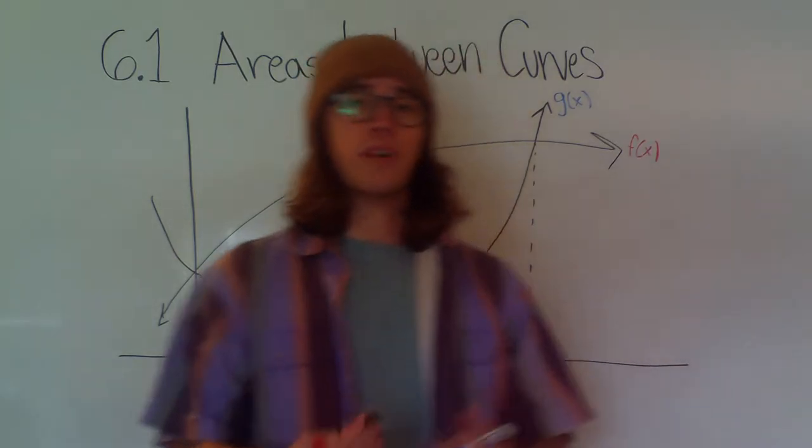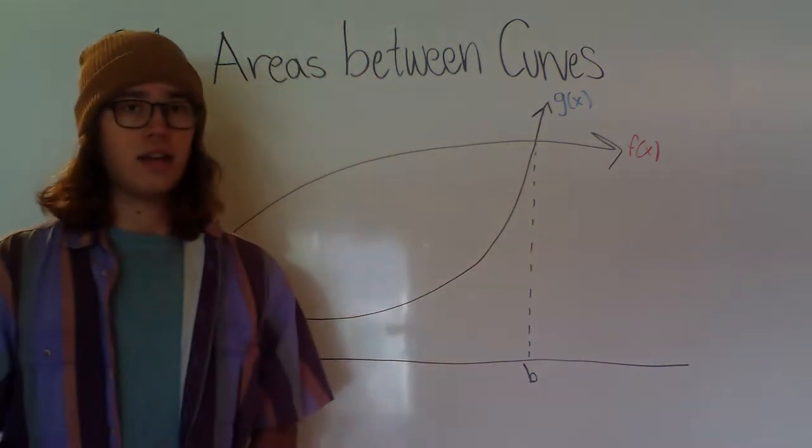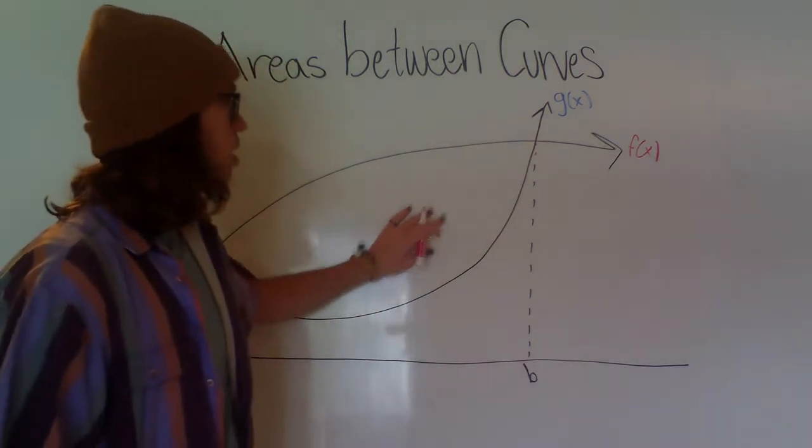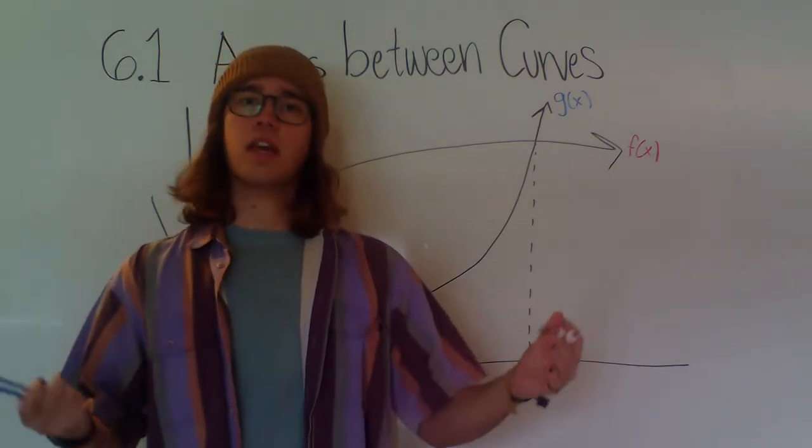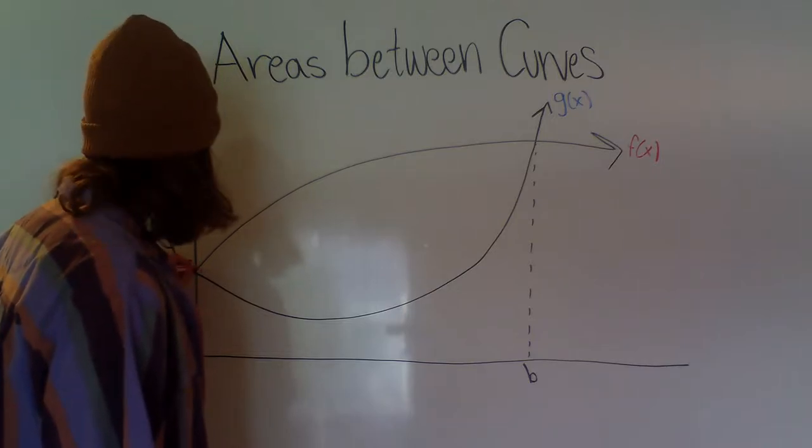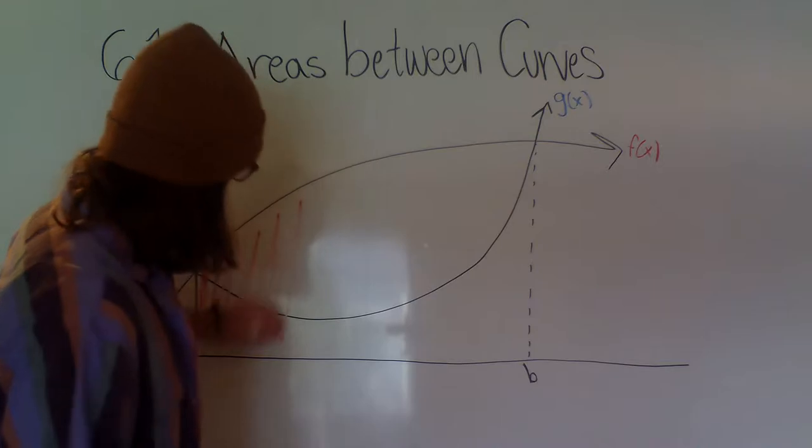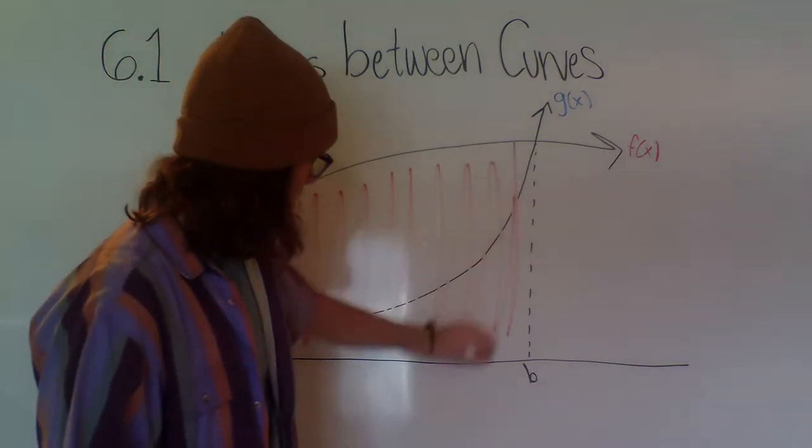So today we want to find the area between two curves. Let's say we have f of x as our red area and we have g of x as our blue area, and we want to find the area in between. If we just look at our curves and fill in the area, we can get a better idea of where to start from. If we fill the area of f of x, that's going to be everything below f of x but stops at the x-axis.